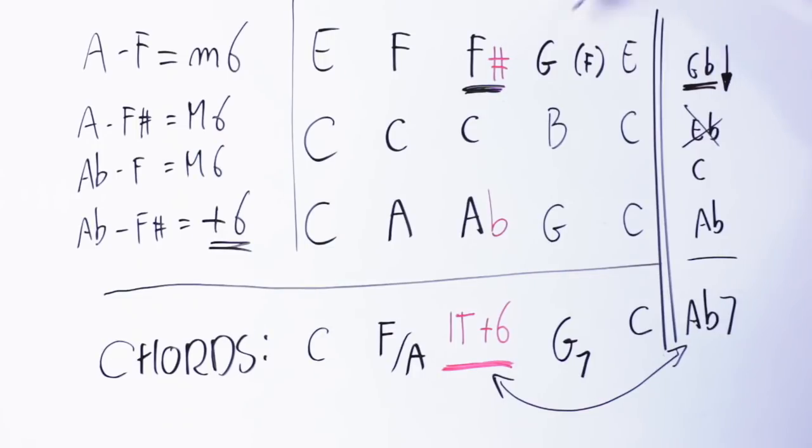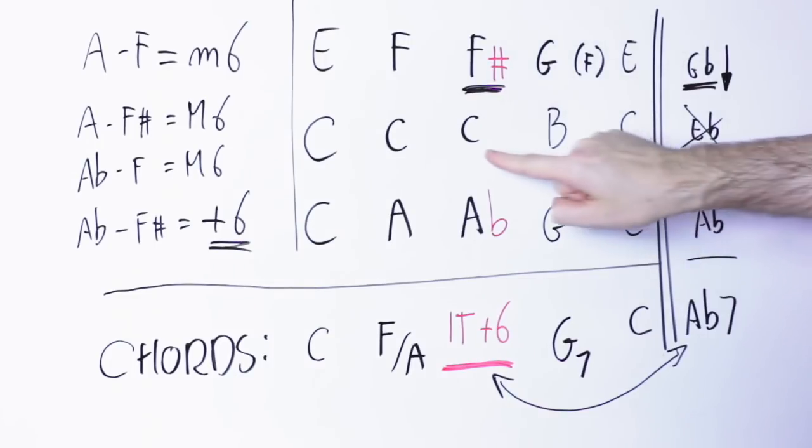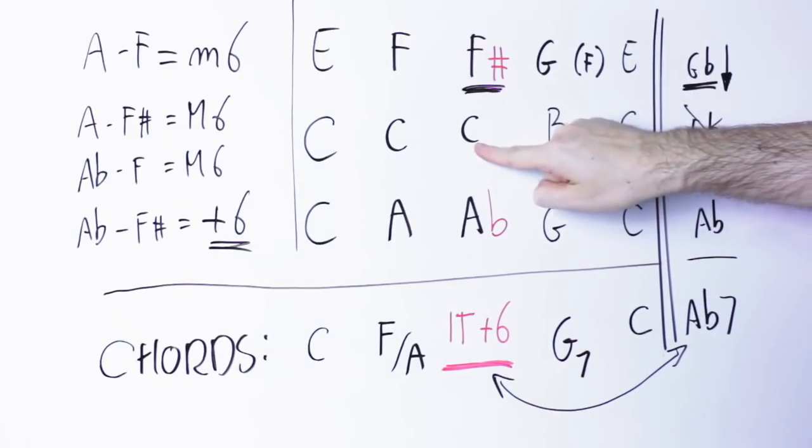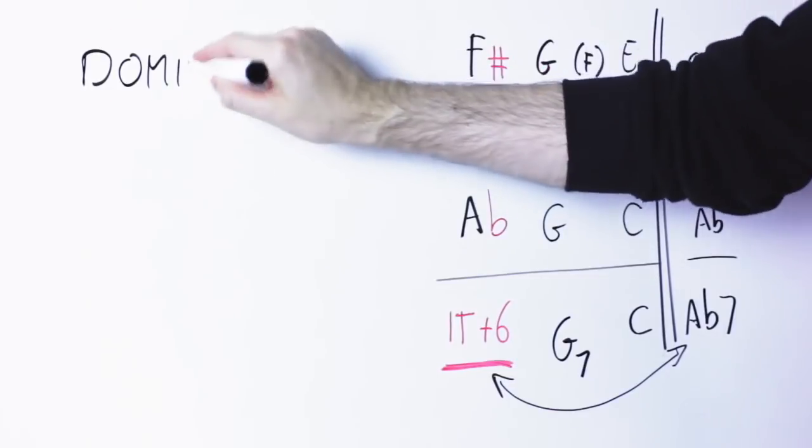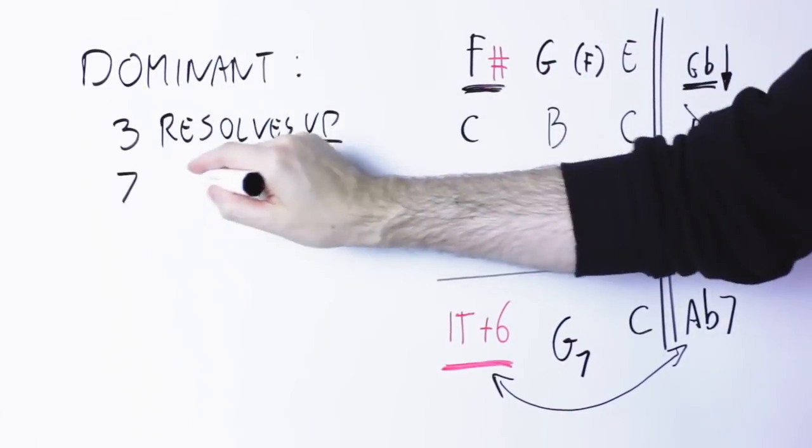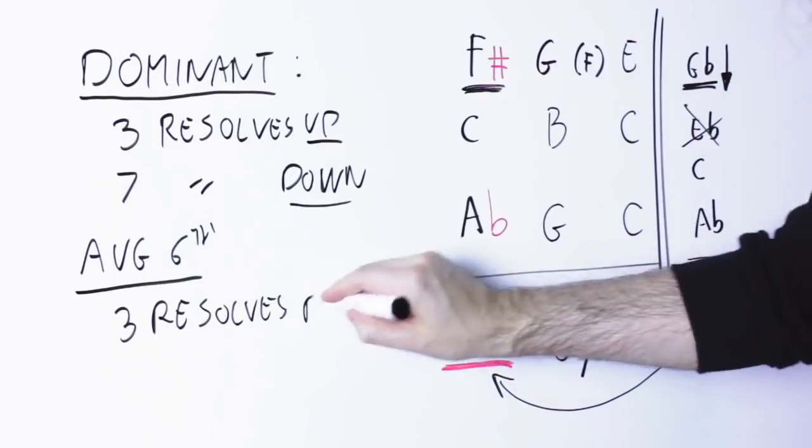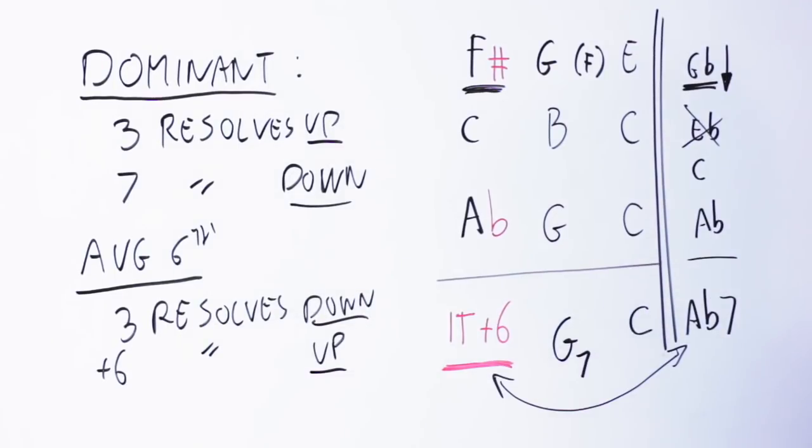Not only that, the third chord of this G7, the B note, resolves up to the C in the C chord. So the third resolves up. But here, in the augmented sixth chord, the third note is this C, resolves down to the B in the G chord. So in a normal dominant chord, the third resolves up and the seven resolves down. While in this chord here, the third resolves down and the augmented sixth resolves up. This is why this chord is called in a different way and it behaves in a different way.